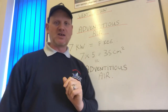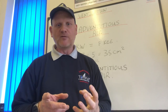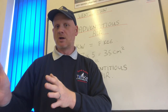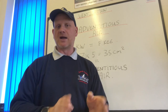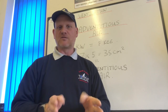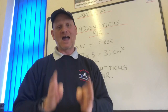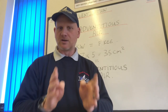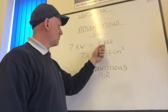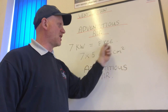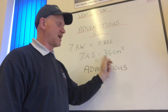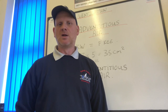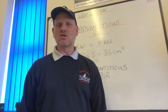Each room built before 2008 is calculated to have 35 centimetres squared of adventitious air. They've worked out that the first seven kilowatts is free for open flue appliances — not flueless appliances, which work off room size. The first seven kilowatts is free unless the manufacturer specifies otherwise and the house was built or renovated before 2008. Seven times five equals 35 centimetres squared — that's the adventitious air allowance.